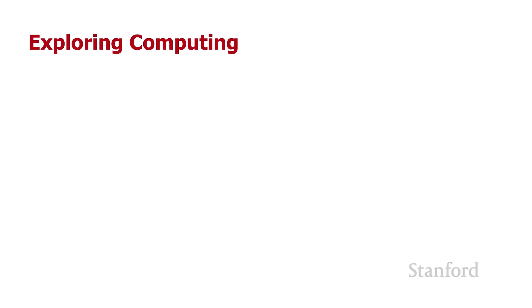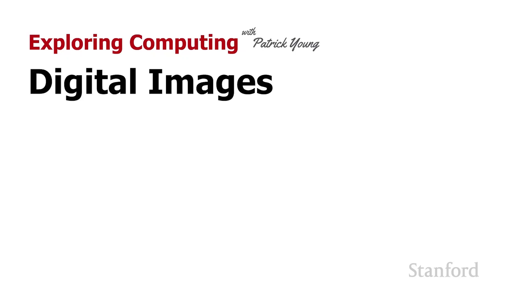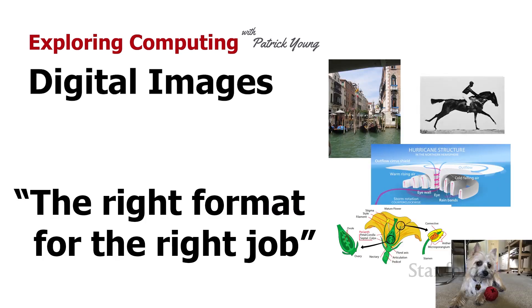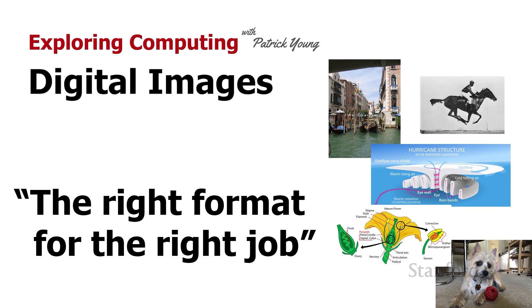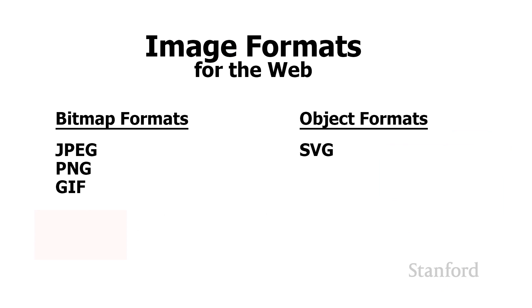Welcome to Exploring Computing. Today's video is Digital Images, Part 4: The Right Format for the Right Job. In this video, I want to talk about different image formats that you might use, focusing primarily on formats used on the web. In this diagram, we can see the primary formats used on the web. There's one object format used on the web, and that's SVG.